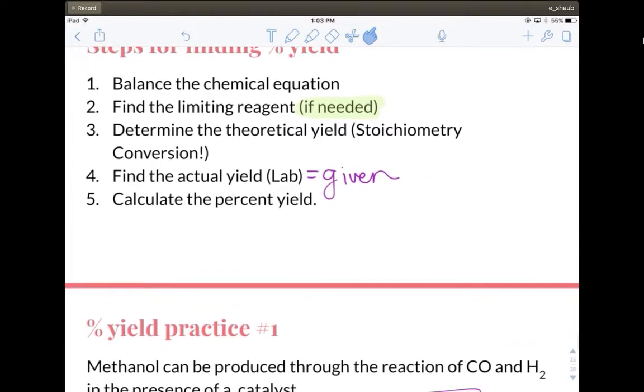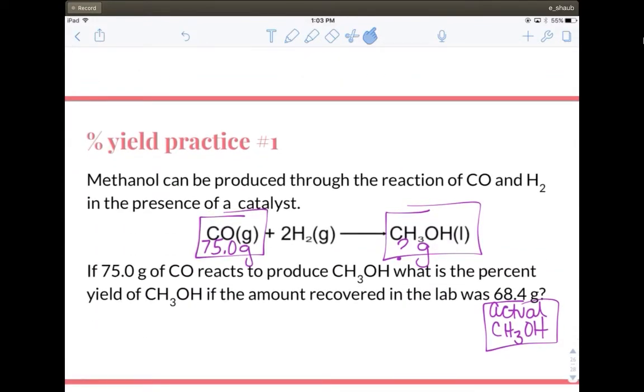So if we look back at these steps, I have the balanced equation. I don't need to worry about the limiting reagent. That's because I only give you one amount of the reactants. If instead I told you 75 grams of carbon monoxide reacts with five grams of hydrogen, then you would need to go through the limiting like what we did before. But we can just assume the hydrogen is in excess, so we don't have to do limiting.